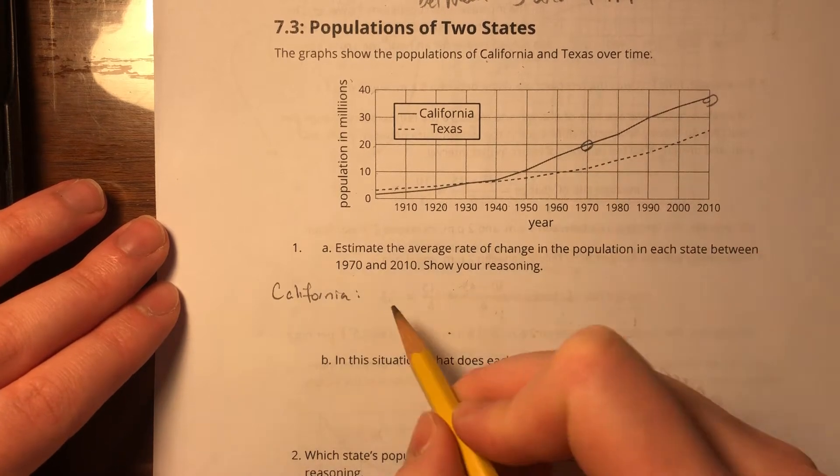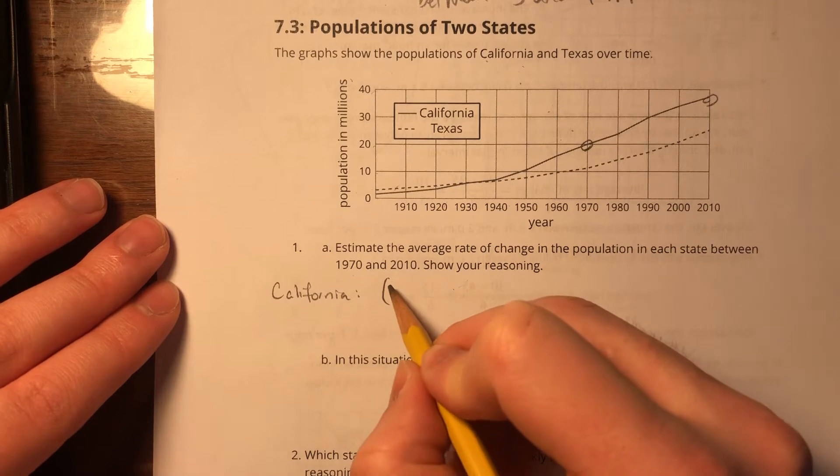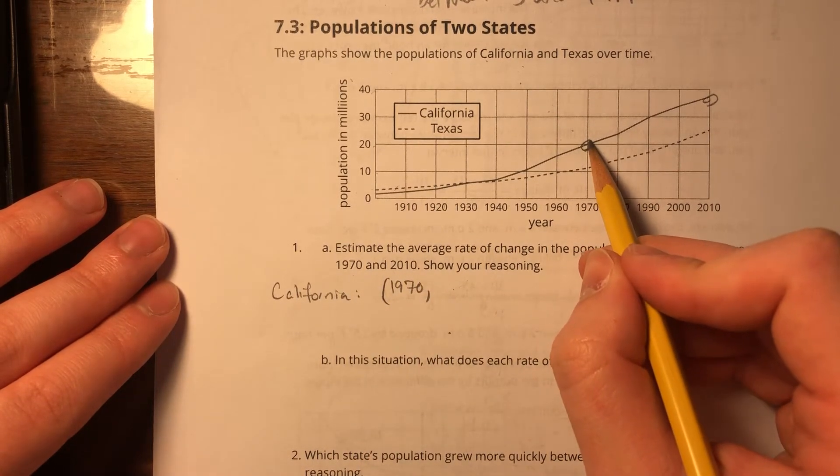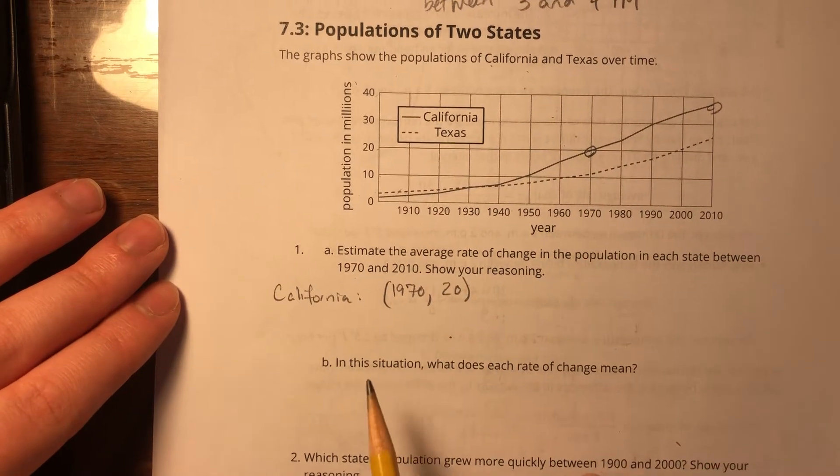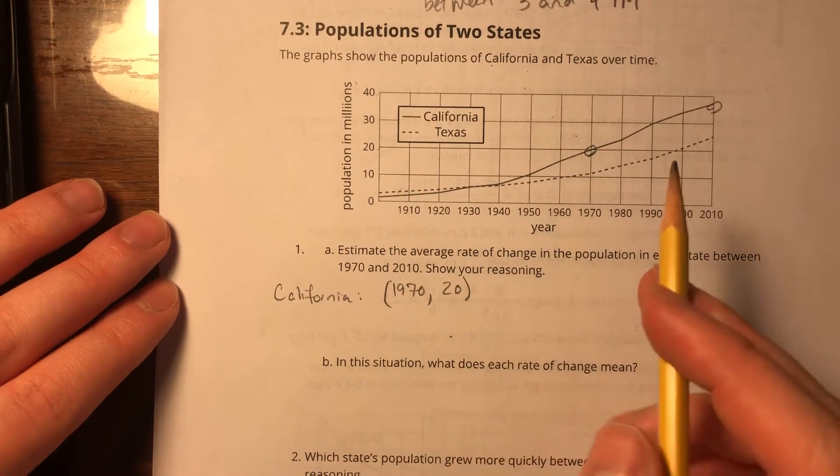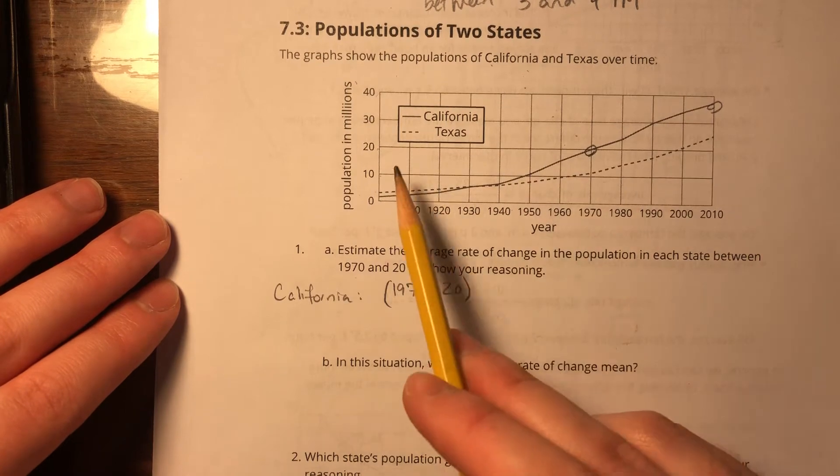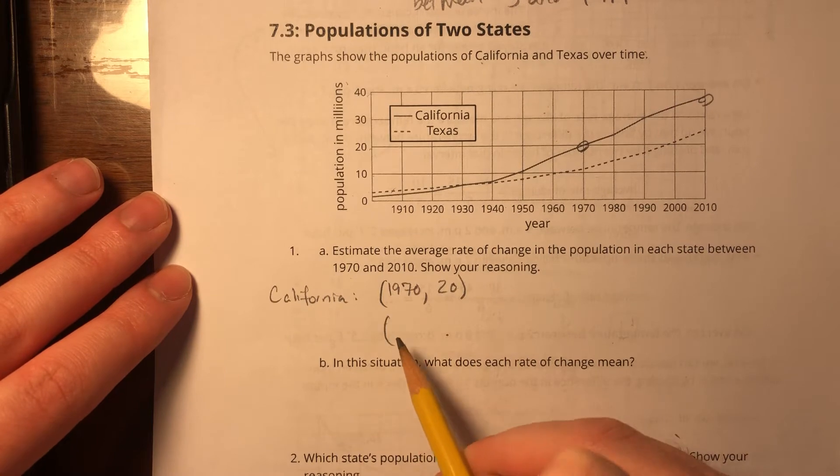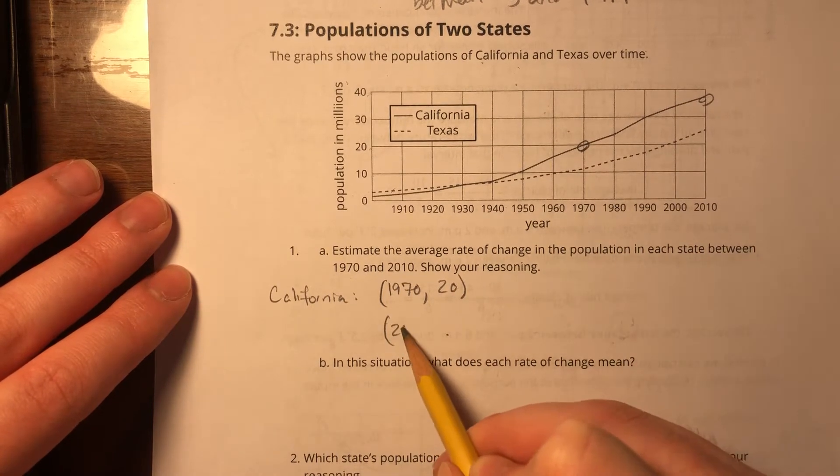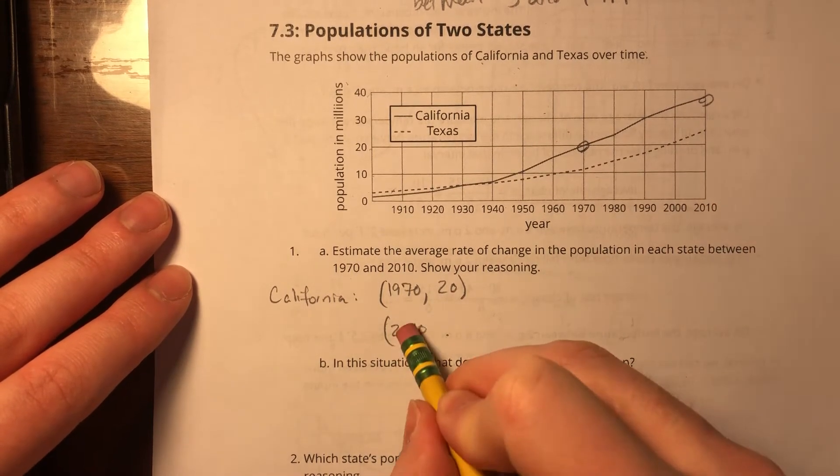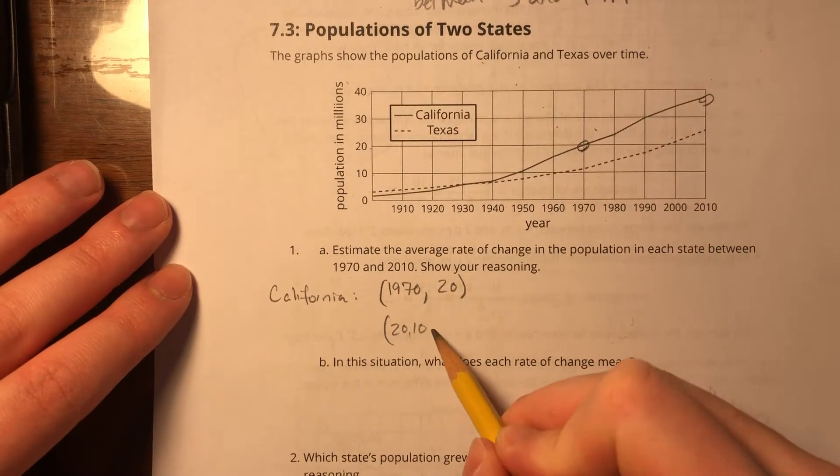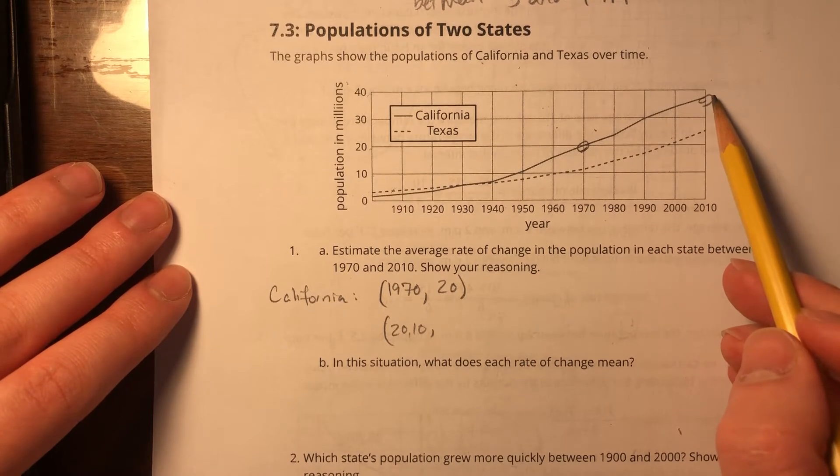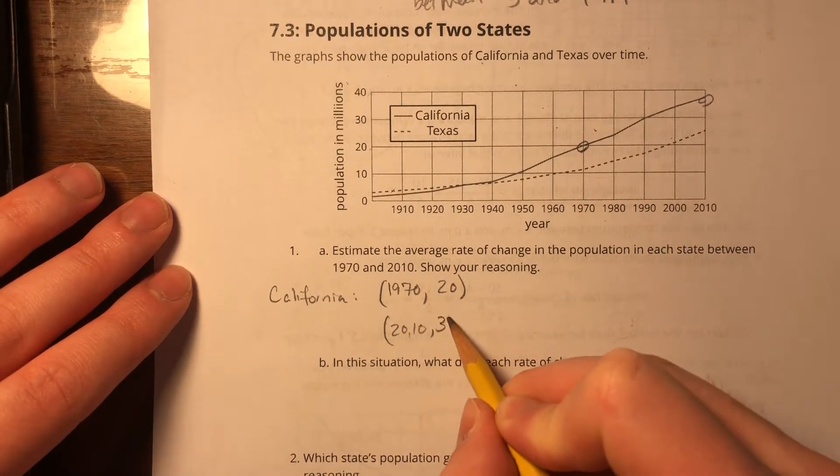If I'm looking at this first coordinate, my x coordinate is 1970 and my y coordinate looks to be 20, or really 20 million, but I'm just going to leave it as 20. If I'm dealing with everything in millions, I can just leave it as 20 and it won't affect my answer. So then the next year is 2010. Don't need a comma there—inappropriate use of a comma. And I'm going to estimate that that's 37, 37 million.